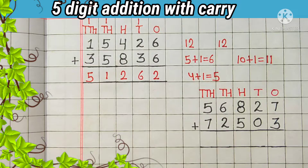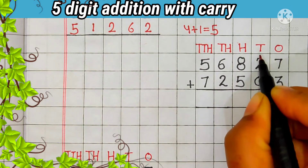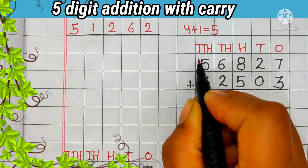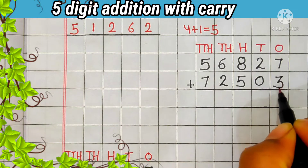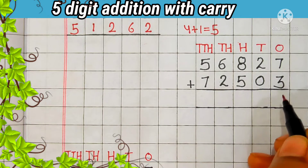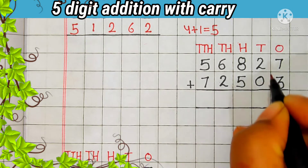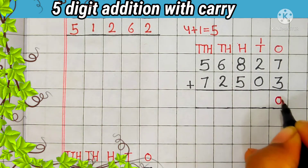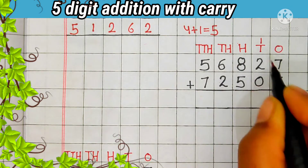Now we will solve the next example. This is the 1s place, 10s place, 100s place, 1,000s place, and 10,000s place. Let's add the 1s first. 7 plus 3 is equal to 10. 10 is a 2-digit number. Now we will carry 1 to the 10s place, and 0 comes in the answer. Then let's add the digit at the 10s place.